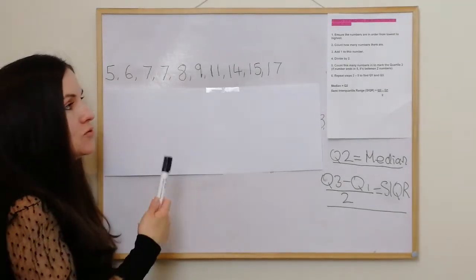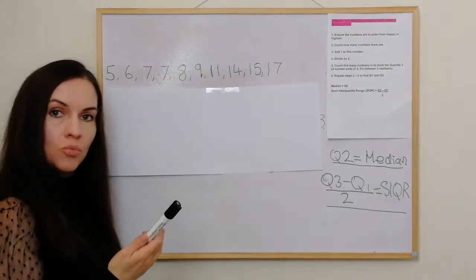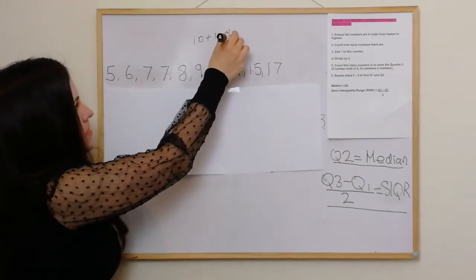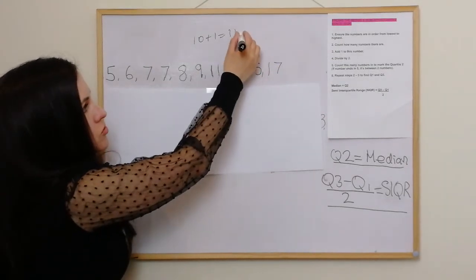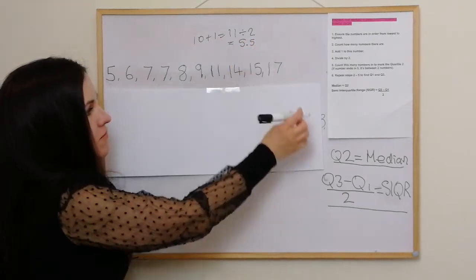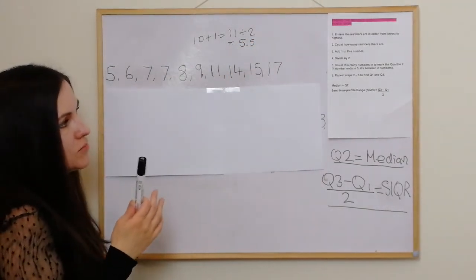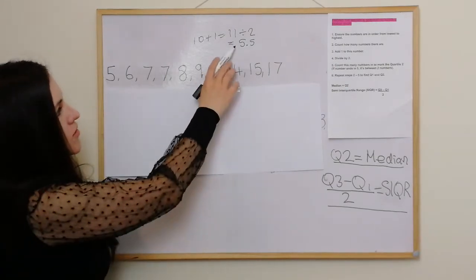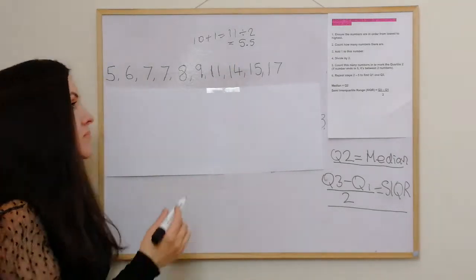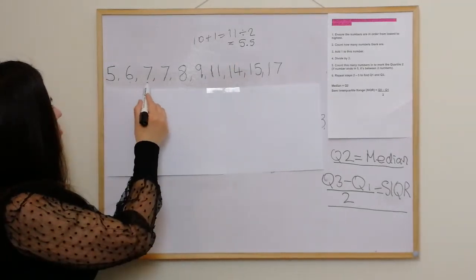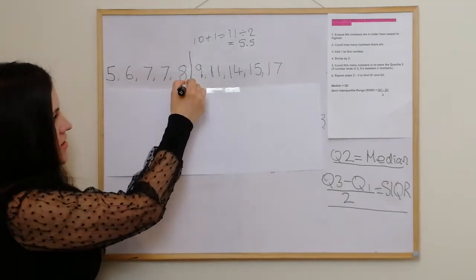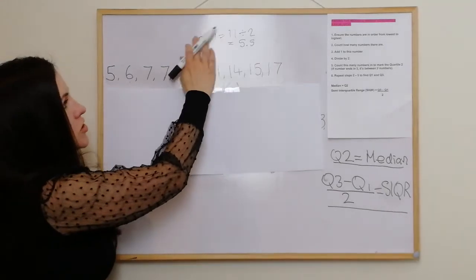Then we add one to this number, so 10 add one is 11. And then we divide by two, which is 5.5. We count this many numbers in, and if it ends in 0.5, it's between two numbers — so it's between 5 and 6. So we go 1, 2, 3, 4, 5 and there's 6. So this will lie here, and this is quartile two.